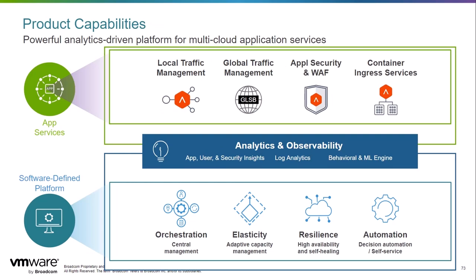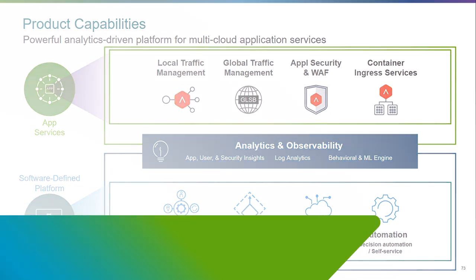Here we see the product capabilities of Avi. For app services, it provides local traffic management, global traffic management, application security and WAF, and container ingress services. For the software-defined platform, it provides central management for orchestration, elasticity for adaptive capacity management, resilience with high availability and self-healing, and automation and self-service.